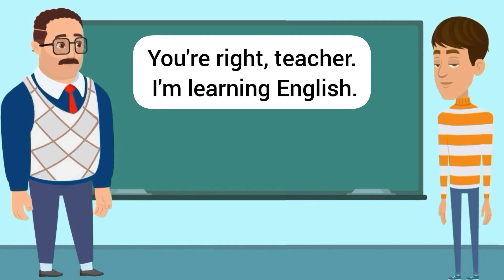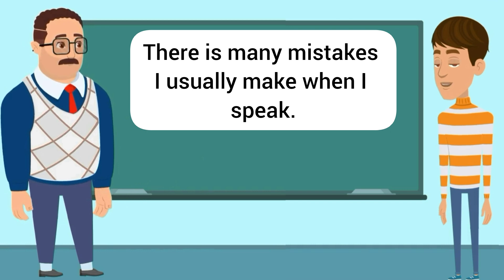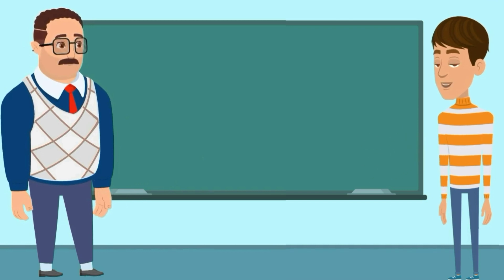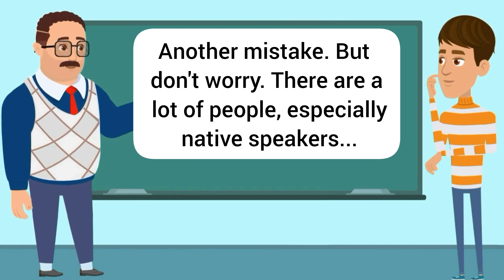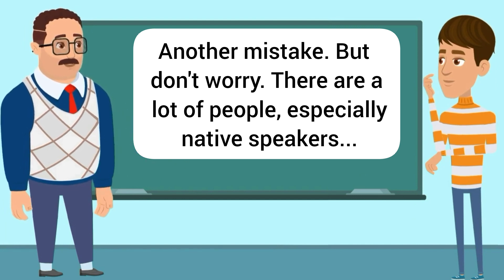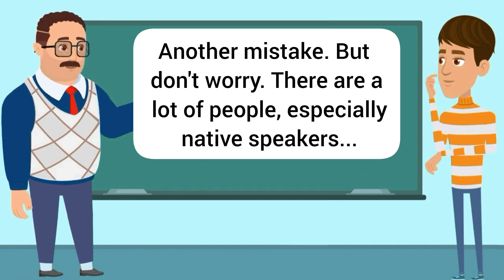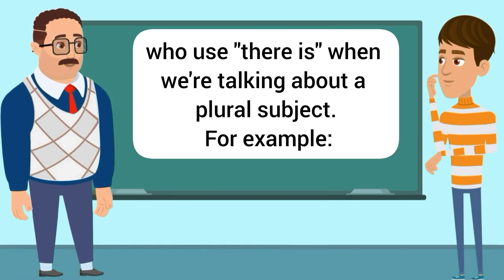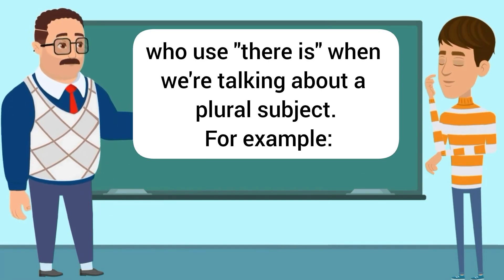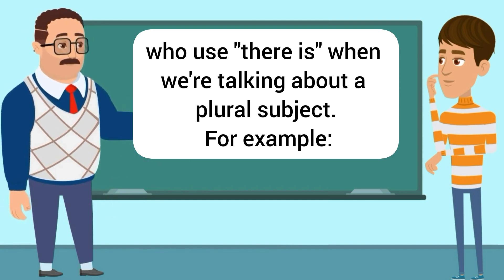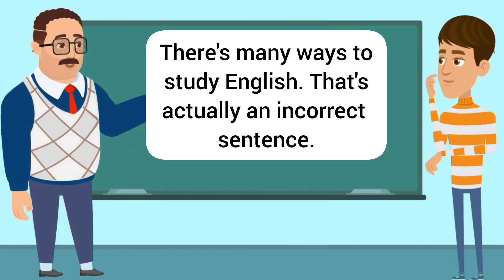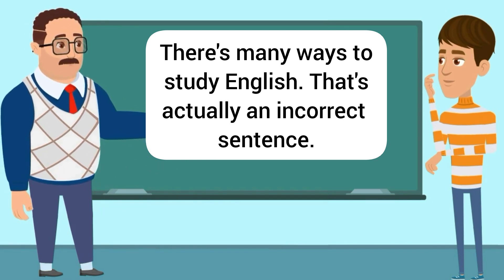You're right, teacher. I'm learning English. There is many mistakes I usually make when I speak. Another mistake. But don't worry — there are a lot of people, especially native speakers, who use 'there is' when we're talking about a plural subject. For example, 'there's many ways to study English' — that's actually an incorrect sentence.